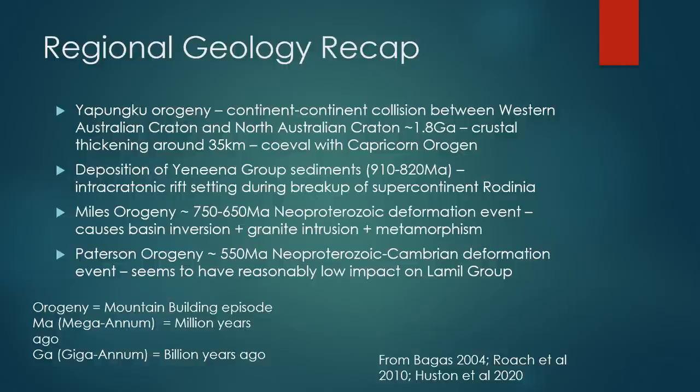The Unina Group deposition is around 910 to 820 million years ago. We then have the most important orogenic event in the region, known as the Miles Orogeny. In the last presentation I gave an age of 650 million years — that's actually the tail end. The actual start date is either 750 million years ago or potentially up to 840 million years ago, though I prefer the younger date. This is a deformation event that caused basin inversion, linked to the granite intrusions, and also caused the metamorphism — all together very important in creating our mineralisation in the region.